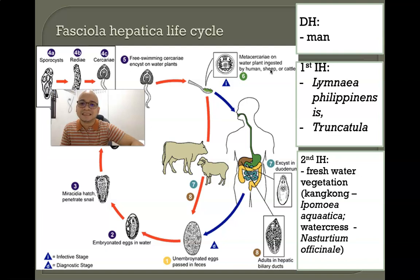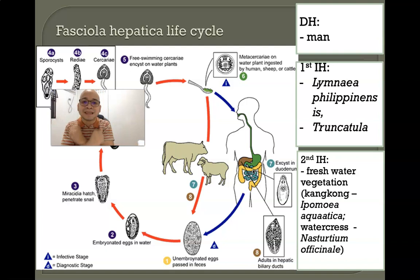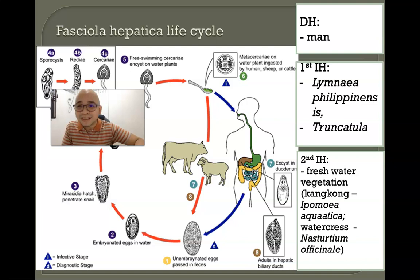Metacercaria on water plants may be ingested by humans, the definitive host, or reservoir hosts such as sheep or cattle. Inside the human, excystment happens in the duodenum, and the parasite grows as an adult in the hepatic biliary tract.